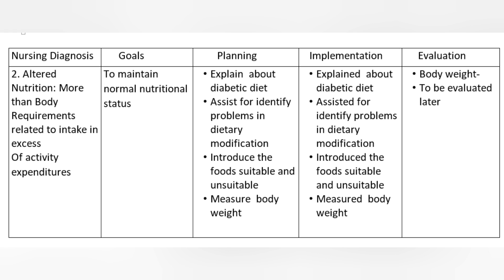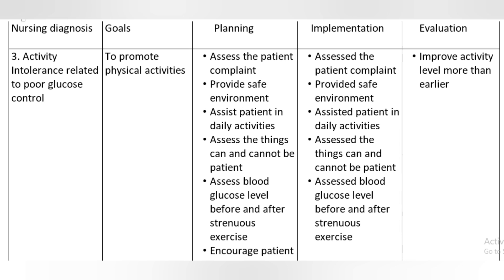Nursing Diagnosis 2: Altered nutrition, more than body requirements, related to intake in excess of activity expenditures. Goal: to maintain normal nutritional status. Planning and Implementation: explain about diabetic diet, assist to identify problems in dietary modification, introduce foods suitable and unsuitable, measure body weight. Evaluation: body weight to be evaluated later.